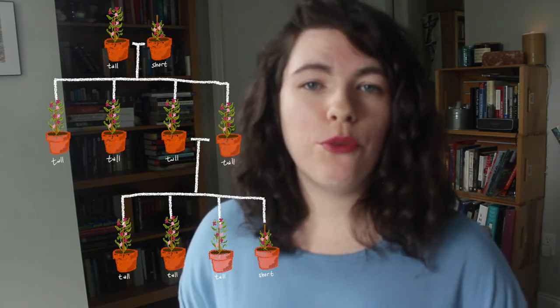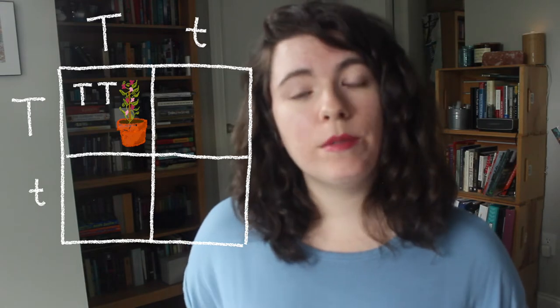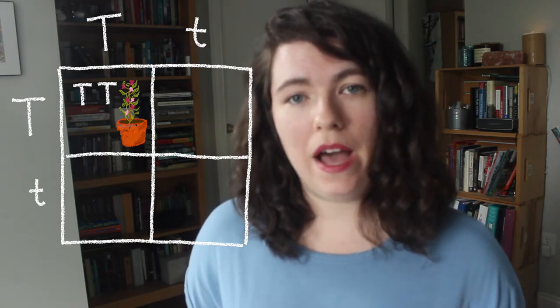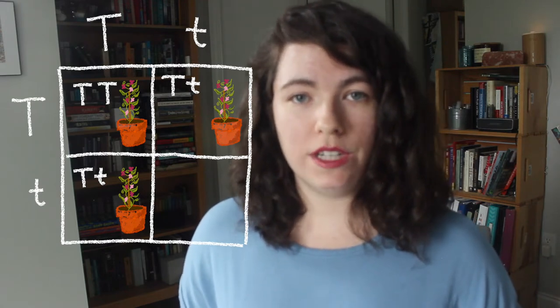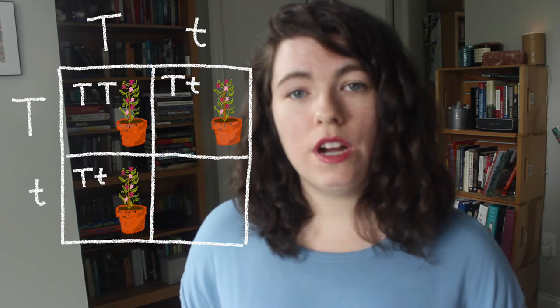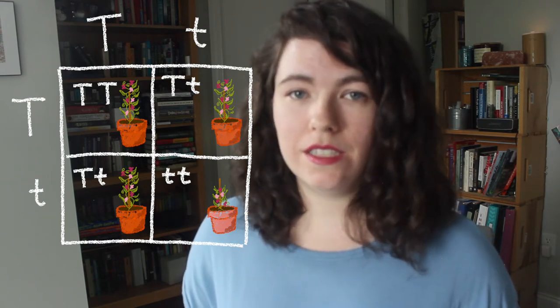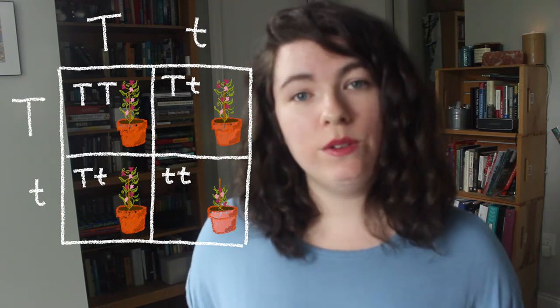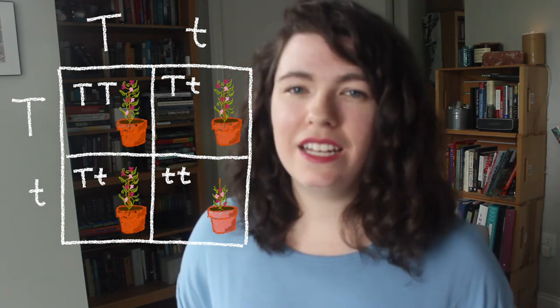Mendel's second generation of plants — the offspring of the offspring — were about three quarters tall and one quarter short. Looking at a Punnett square for two hybrid parents: one option is the offspring gets one tall allele from each hybrid parent, so it will definitely be tall. Two spots in the Punnett square get one tall and one short allele — genotypically hybrid, but phenotypically tall. The last spot gets two short alleles, so that plant is short. Even though both parents were phenotypically tall, the expression of shortness re-emerges because the short gene was hiding recessively in the hybrid parents.